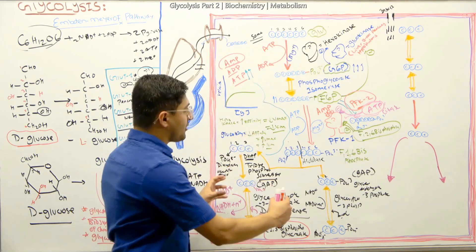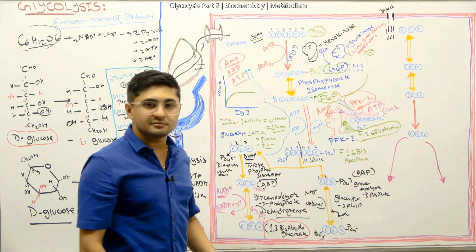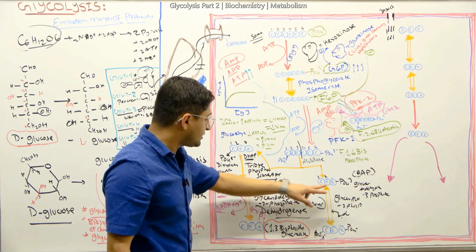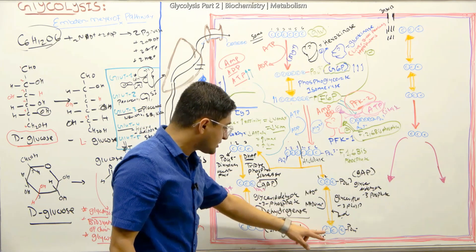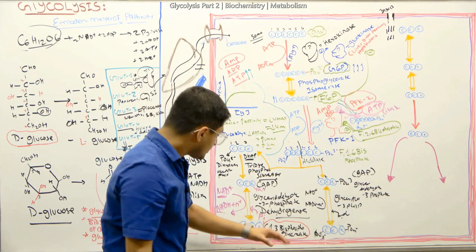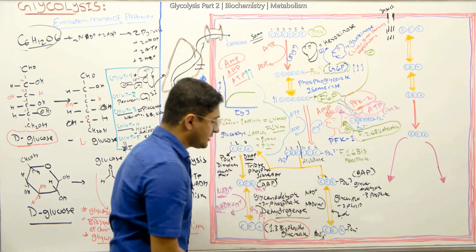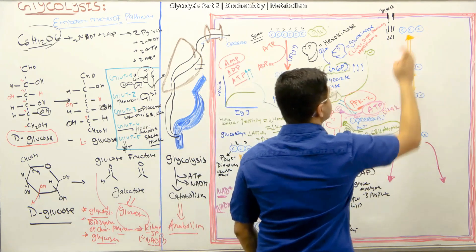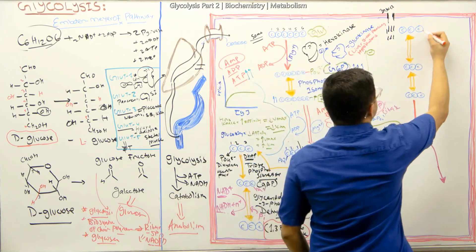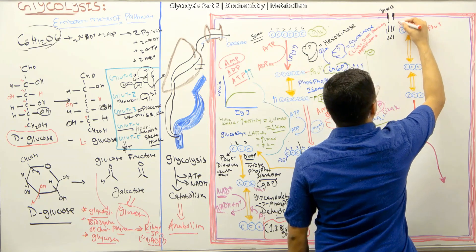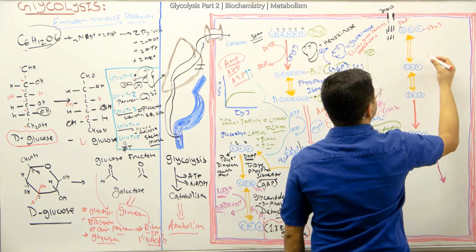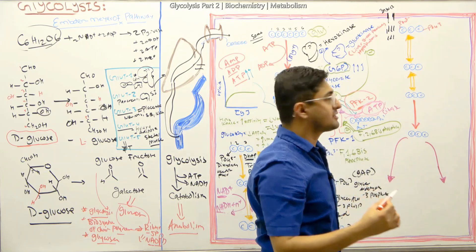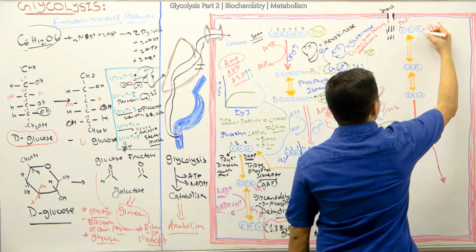So far, if we look back, how many glyceraldehyde-3-phosphate molecules have we made? Two — there's one here and one here. That means how many 1,3-bisphosphoglycerate did we make? We made two of them. Now, what is going to happen with this 1,3-bisphosphoglycerate? It can go two ways. Remember, 1,3-bisphosphoglycerate can go to the red blood cells.